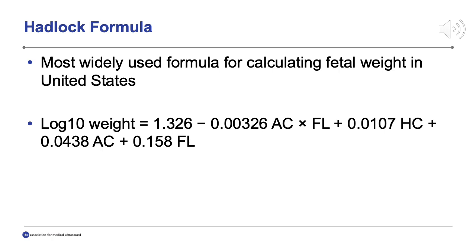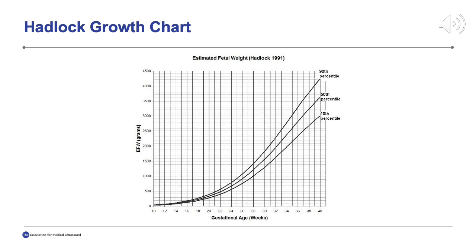The Hadlock formula is the most widely used formula for calculating fetal weight in the United States, and it is used in our institution for estimating fetal weight. Fetal growth is estimated based on measurements of the biparietal diameter, head circumference, abdominal circumference, and femur length. The mathematical equation is listed on the slide. The Hadlock formula was established in the 1970s based on pregnancy data from white women — no other race or ethnicity data was included. This is a picture of the fetal growth chart developed per the Hadlock formula, which is also the chart available in most ultrasound software today.